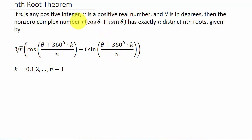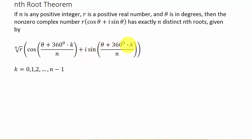So if this is our complex number — and notice it's in trigonometric form — then the nth root is given by the nth root of r times cosine of (theta plus 360 degrees times k over n), plus i sine (theta plus 360 degrees times k over n), where k is 0, 1, 2, all the way to n minus 1.